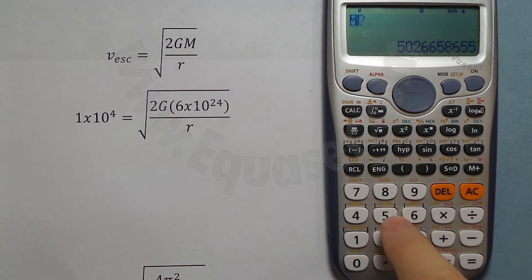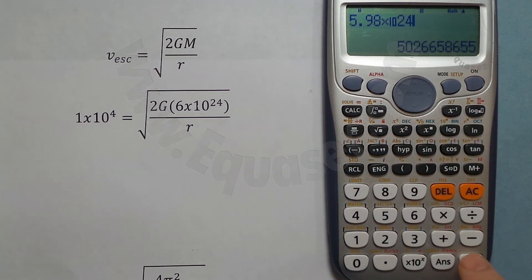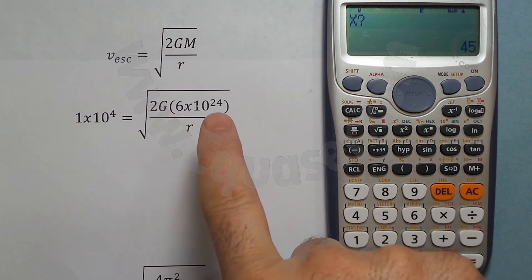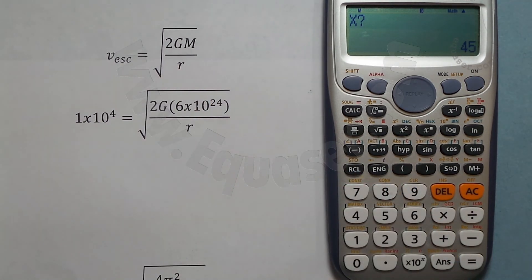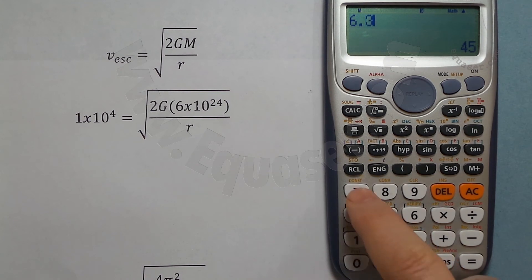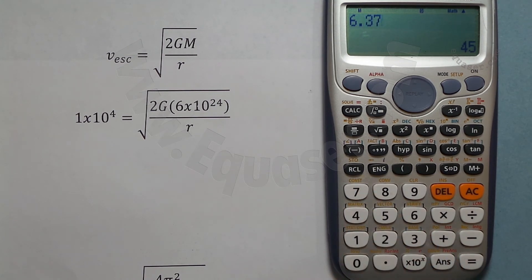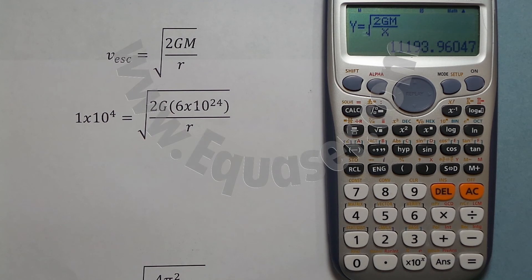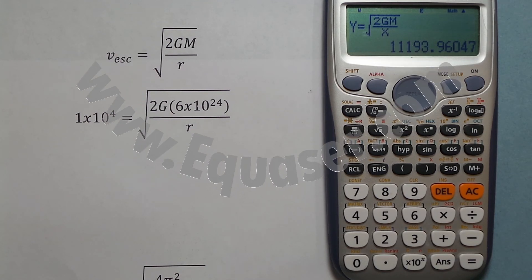Enter 5.98 times 10 to the 24 — that's m — then press the equal sign. After that it's asking for x, which is our r: 6.37 times 10 to the 6 — that's the radius of Earth. Press equal sign and that gives the velocity: 11,193 meters per second. Thank you for your attention.